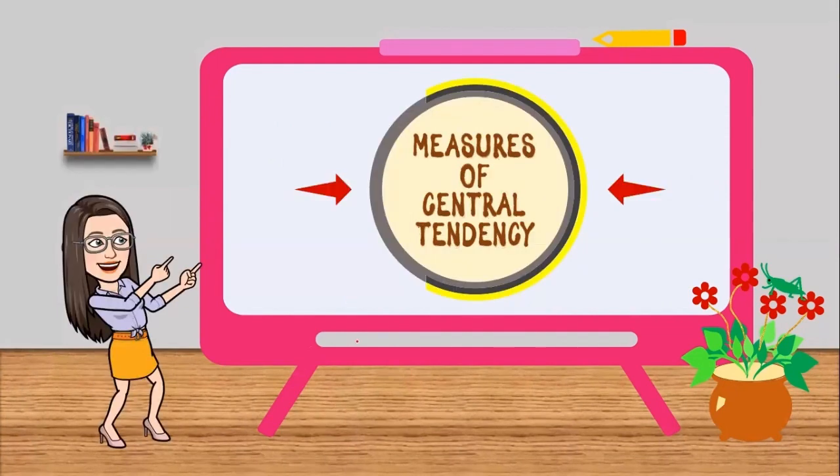Mean, median, and mode are measures of central tendency, meaning we have to get the central position of the set of data.